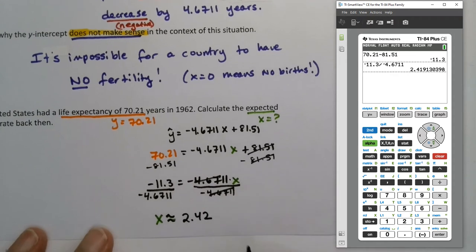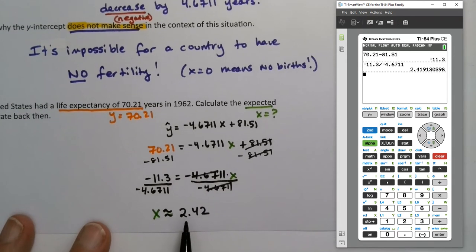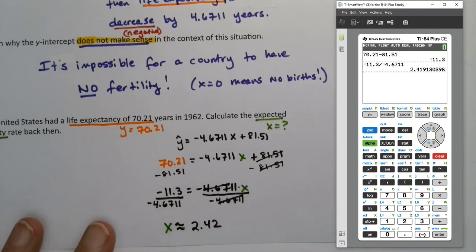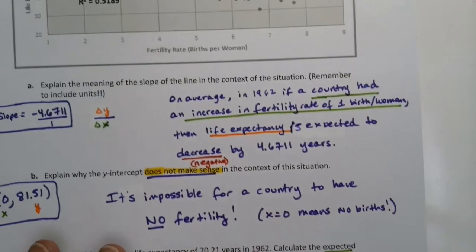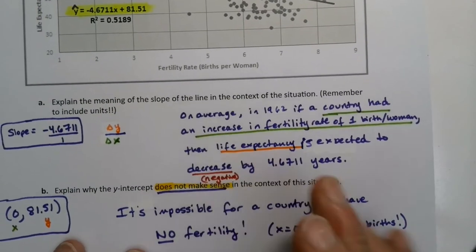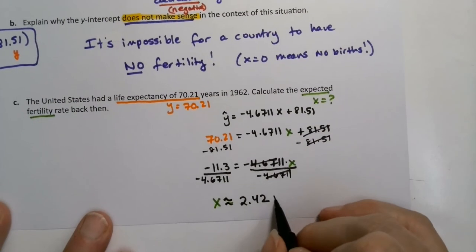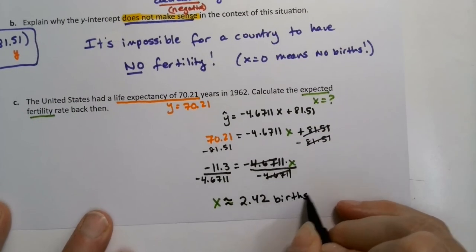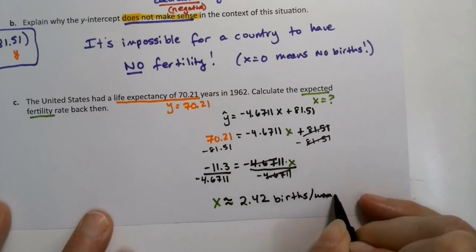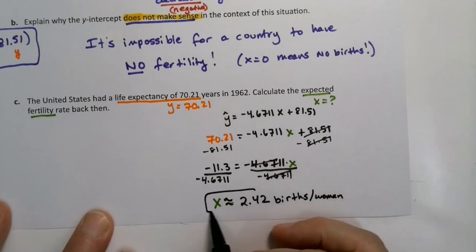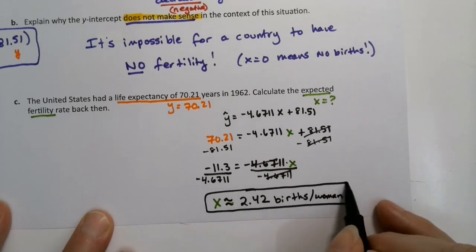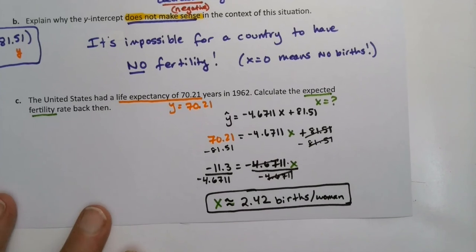Now, 2.42 what? This was x. x was fertility rate. So, fertility rate is births per woman. So, that would be our unit. It'd be births per woman. Per, by the way, P-E-R means division. So, you can use division sign to stand for that. Births per woman.